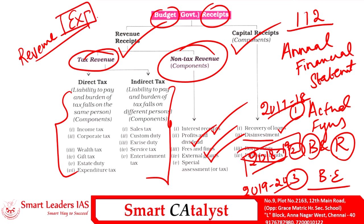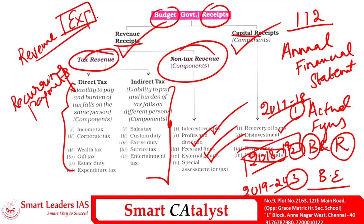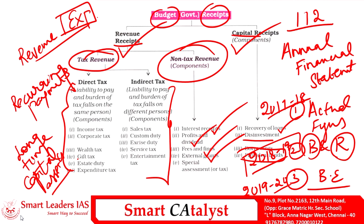On the expenditure side of the budget, it is similarly classified into two parts: the revenue side and the capital side. The revenue side consists of recurring payments made by the government, whereas the capital expenditure consists of payments towards creating long-term capital assets. These are the basic components of a budget.